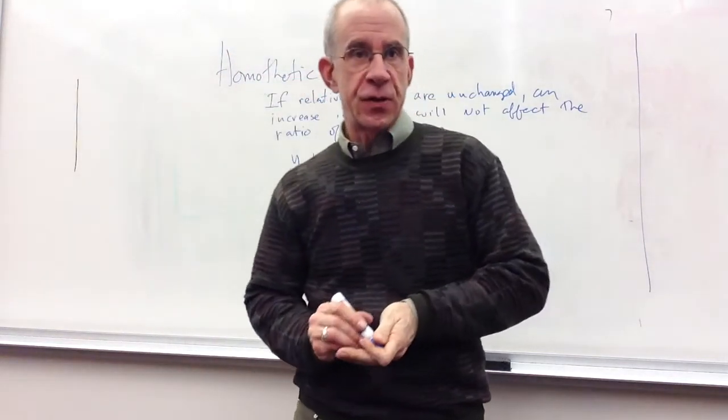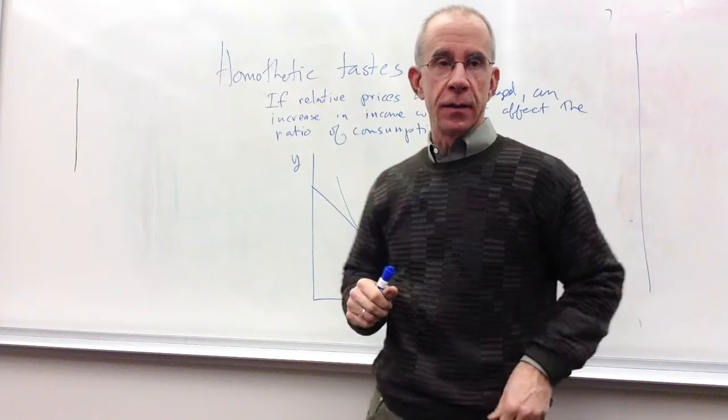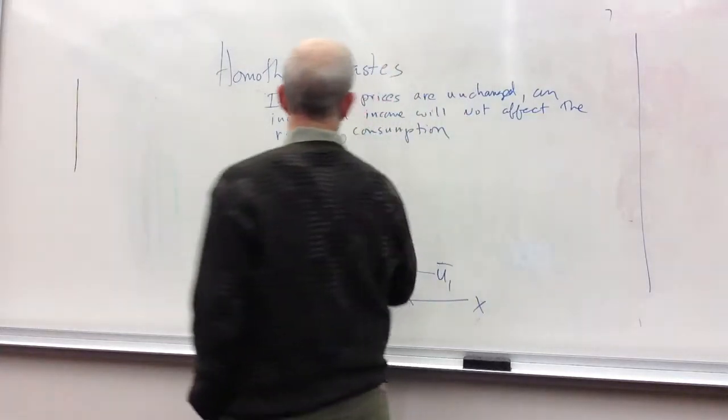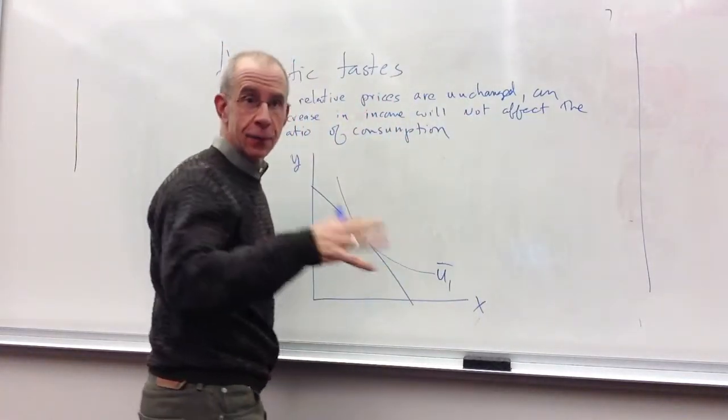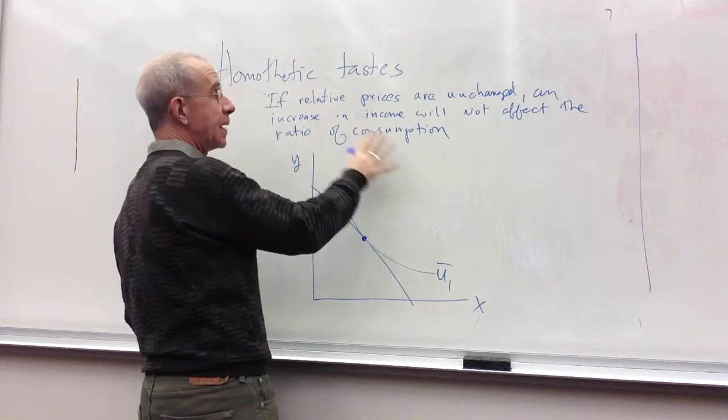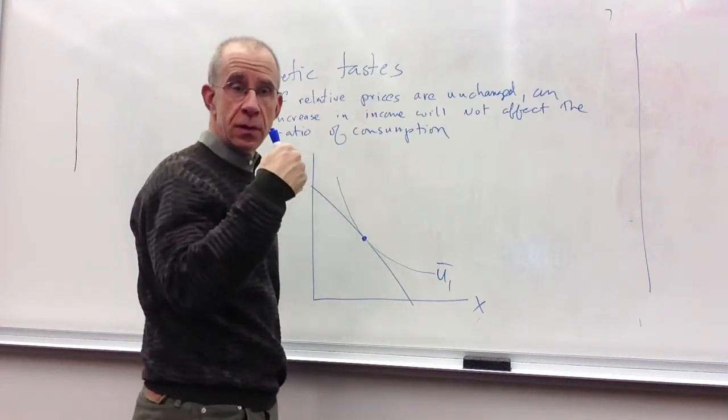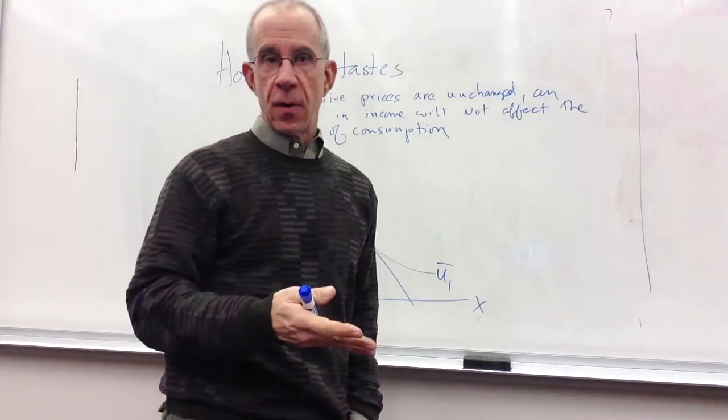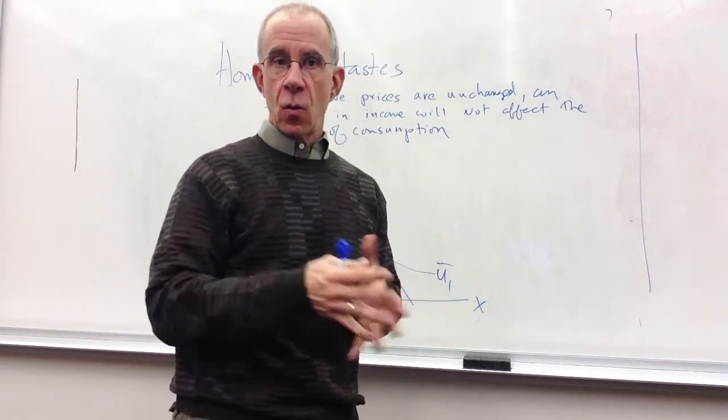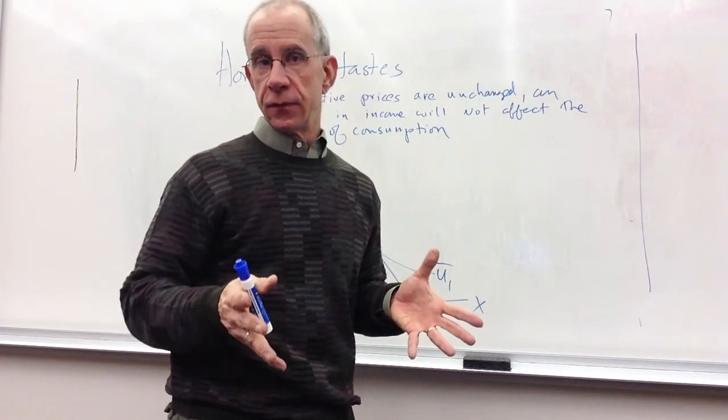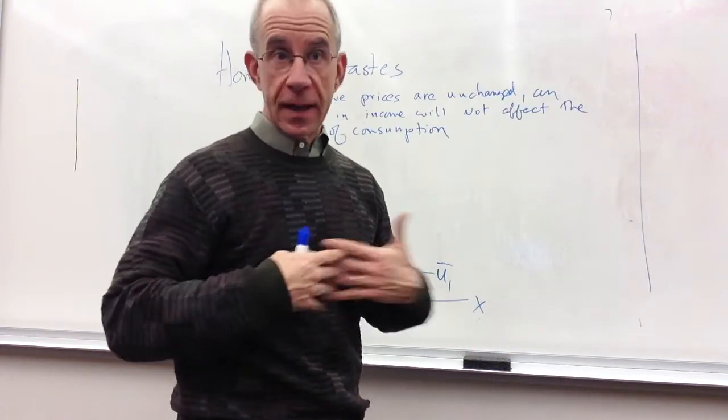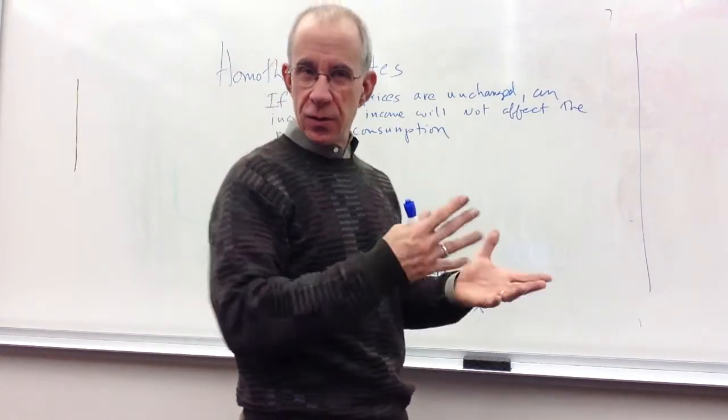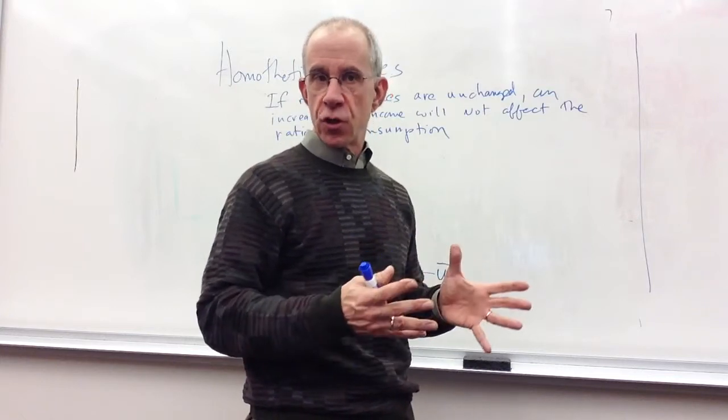Now, this is sort of obscure econ jargon but actually has a very simple idea. So homothetic taste, officially or formally, basically says that if you increase income to consumers and you keep relative prices the same, then you're going to consume the same combination of goods. So income goes up, prices don't change, you consume more of both goods, but you do so in the same combination.